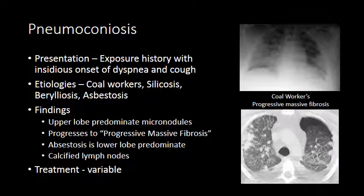Asbestosis differs from other pneumoconioses in that it is a lower lobe predominant phenomenon. Another feature that typifies pneumoconiosis is calcified lymph nodes. Treatment is variable but starts with removal of exposure to the inciting particle.